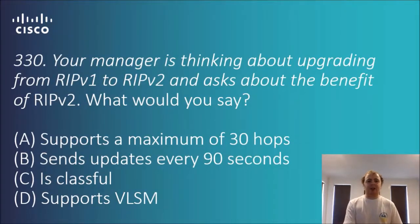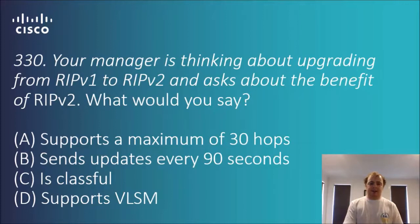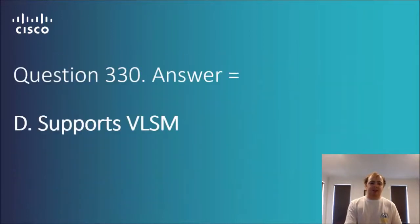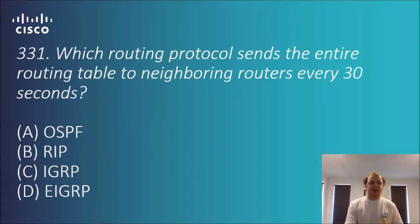Question 3.30: your manager is thinking about upgrading from RIP version 1 to version 2 and asks about the benefit of RIP version 2. The options include maximum hops of 30, updates every 90 seconds, classful, and supports VLSM. Both versions support 30 hops, one is classful and one is classless, and updates are similar. The answer is D — RIP version 1 does not support VLSM, so that's the key benefit of version 2.